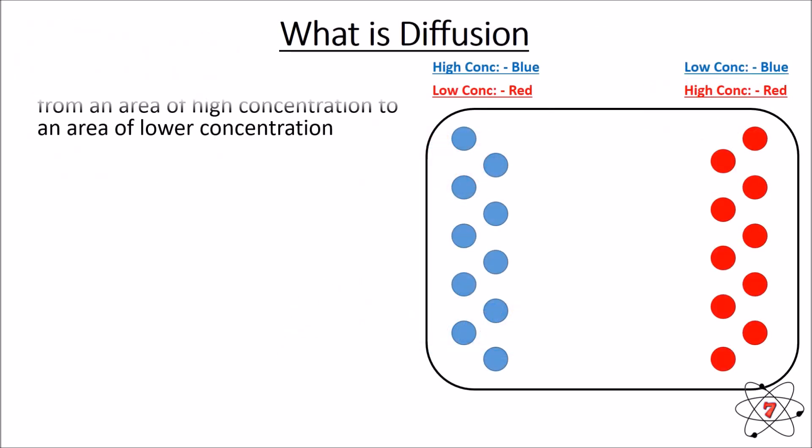So what is diffusion? Well diffusion is the movement of particles from an area of high concentration to an area of lower concentration. If we look at the little graphic to the right hand side of the screen we can see that on the left hand side of this box the blue particles have a high concentration. There are lots of them there.